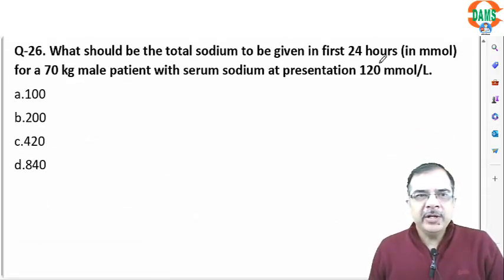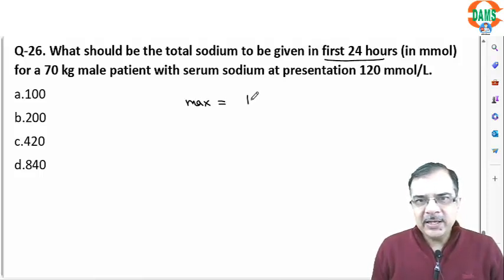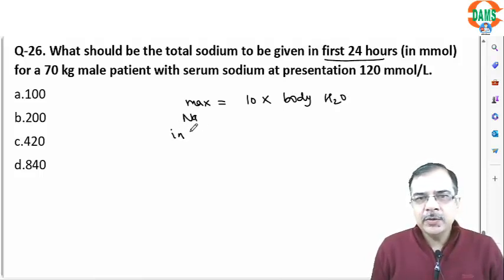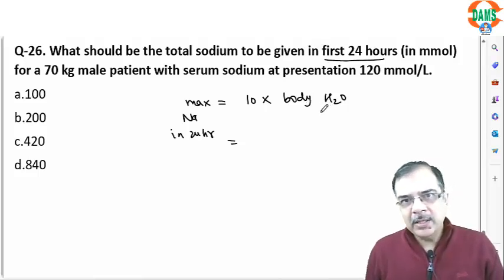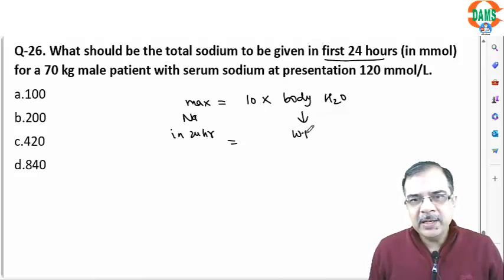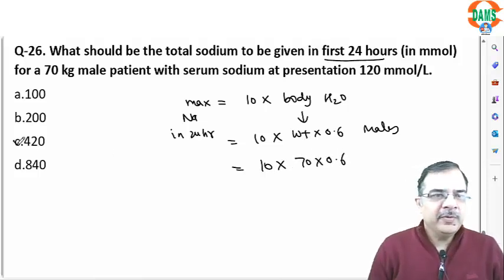Question 25: calculating total sodium to be given in 24 hours. In the first 24 hours, the maximum total sodium that can be given is 10 multiplied by total body water. Body water equals body weight multiplied by 0.6 for males and 0.5 for females. With a weight of 70 kg (male): 10 × (70 × 0.6) = 10 × 42 = 420 mmol.